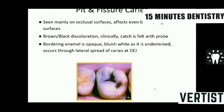Pit and fissure caries is seen mainly on the occlusal surfaces but also affects buccal and lingual surfaces. It appears as a brownish-black discoloration. Although only a small portion of the tooth looks affected from the surface, drilling reveals a large cavity inside due to undermining of the dentine. This lateral spread of caries occurs at the dentino-enamel junction — a very characteristic feature of pit and fissure caries, which progresses faster and involves a great amount of tooth surface.